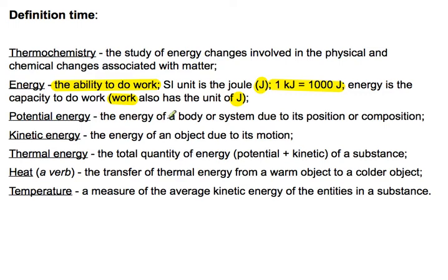Three types of energy. Potential energy, energy of a system or a body due to its position or composition. So when we say composition here, we're talking about chemical potential energy. That's the bonds in the different compounds. Kinetic energy is the energy due to motion. We don't talk about that a whole lot here. Thermal energy, the total quantity of energy, potential plus kinetic of a substance. And we do look at that a little bit in terms of heat capacities and stuff. And I'm going to explain a little bit of thermal energy in a minute.